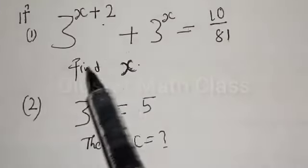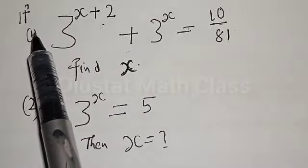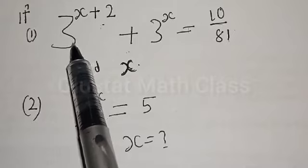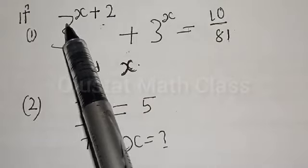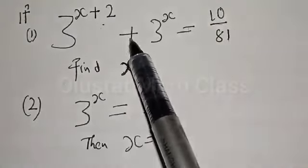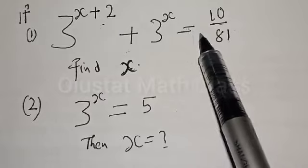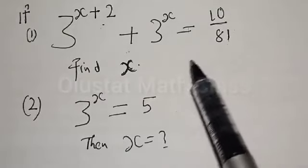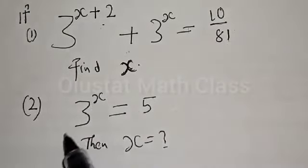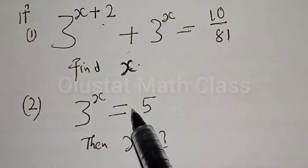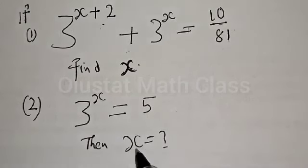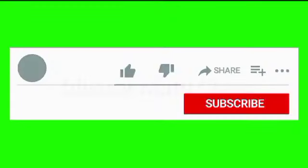Hi everyone, welcome to my class. In today's class we want to look at how we can quickly find the value of x from two given exponential equations. Number one: if 3 raised to power x+2 plus 3 raised to power x is equal to 10 divided by 81, find the value of x. Number two: if 3 raised to power x is equal to 5, find the value of x. But before we proceed, please don't forget to like, share, comment, and subscribe.